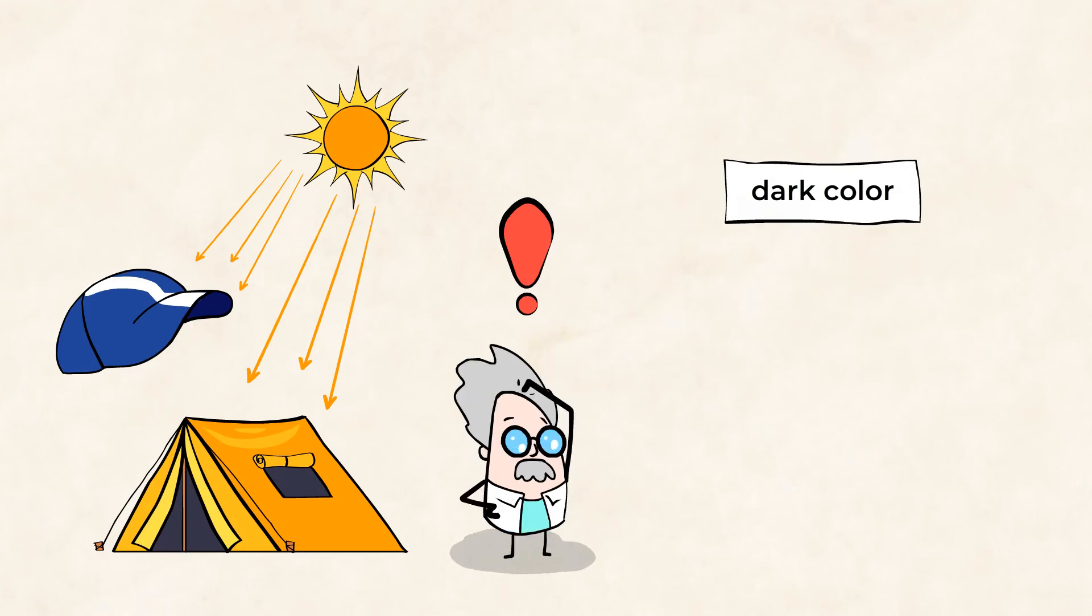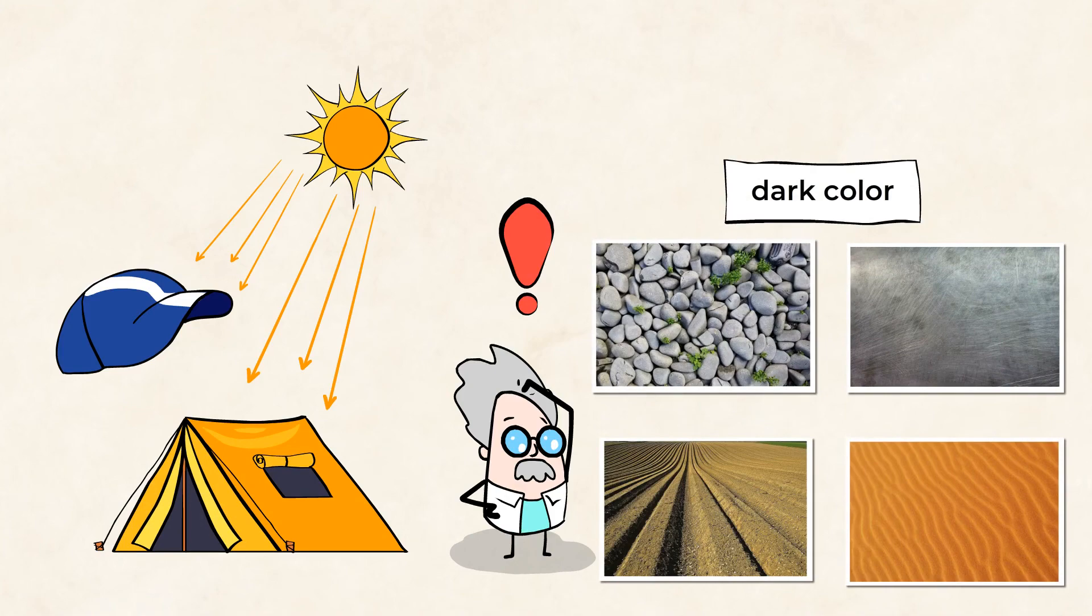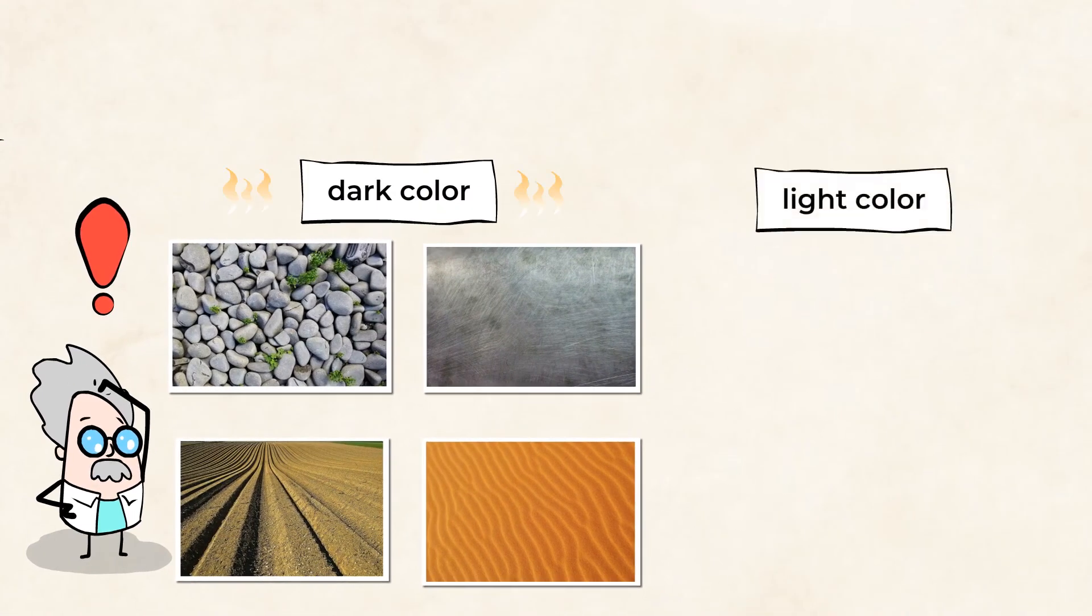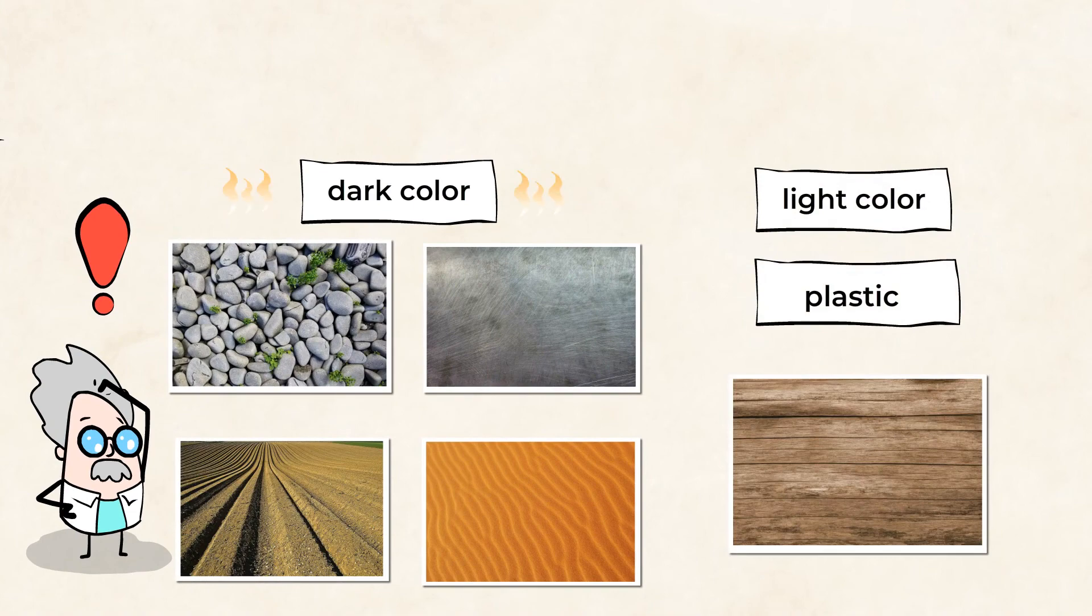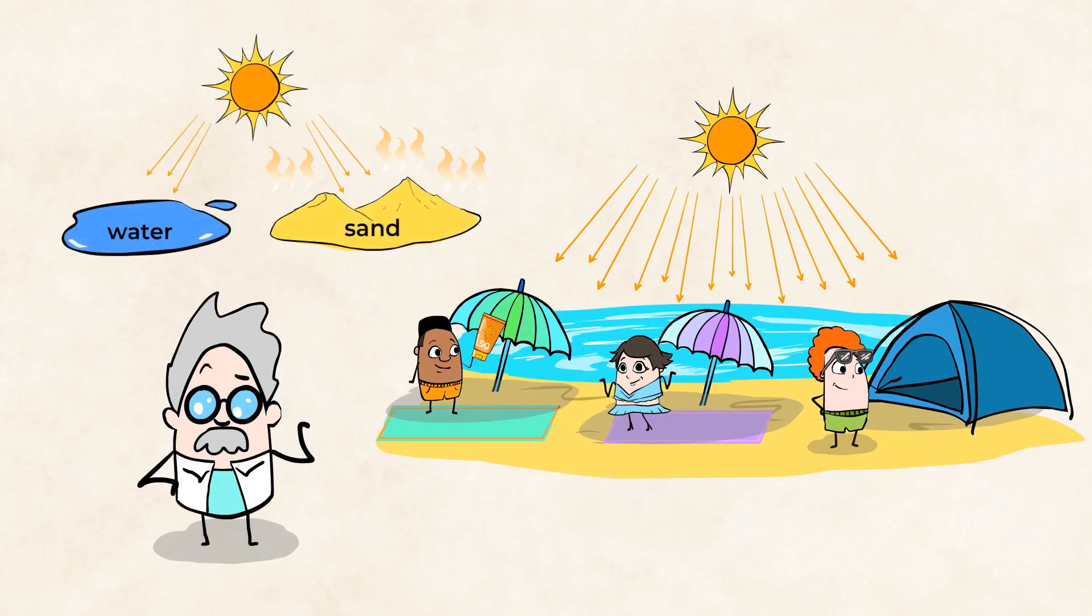Dark color surfaces like rocks or metal, the ground, even the sand will heat faster than light color surfaces or plastic or wood materials. That is the reason why, when we are at the beach, we go in the water to cool down. Water is lighter than sand.